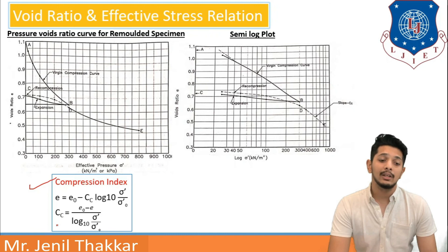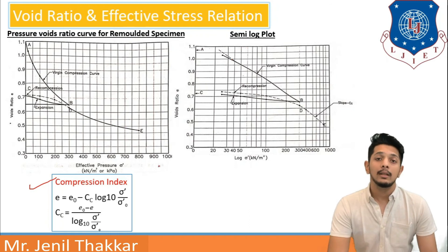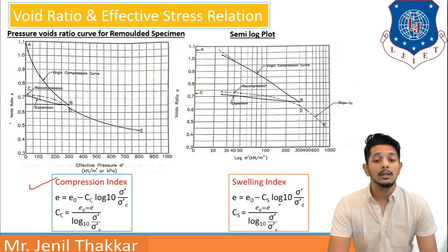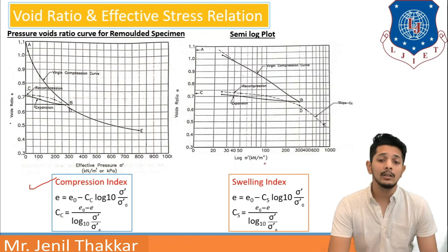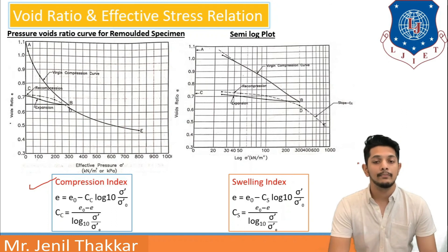Another empirical formula given by Terzaghi is for the swelling index: e = e₀ − Cs × log₁₀(σ′ / σ₀′), where Cs is the swelling index. The swelling index is obtained from the slope of curve BC, the expansion curve. Cs can be written as: Cs = (e₀ − e) / log₁₀(σ′ / σ₀′).